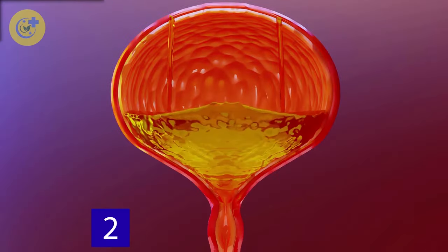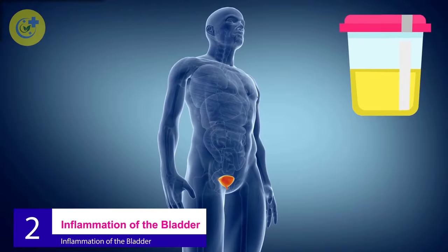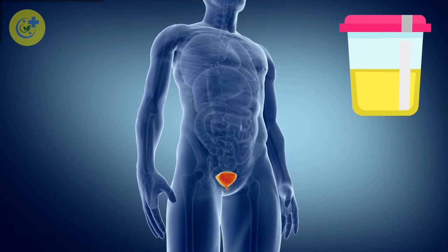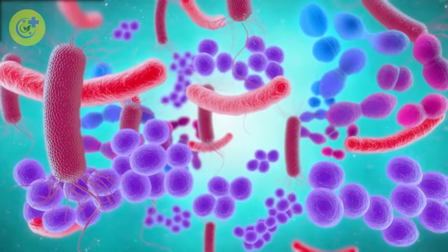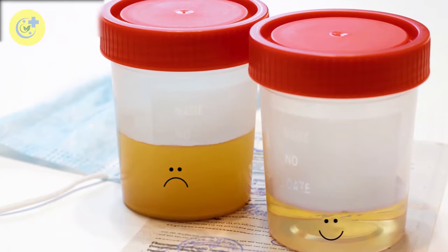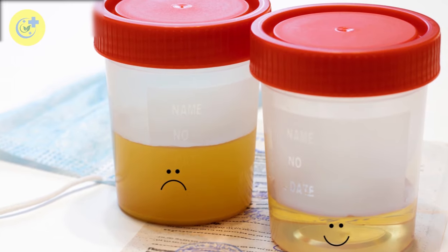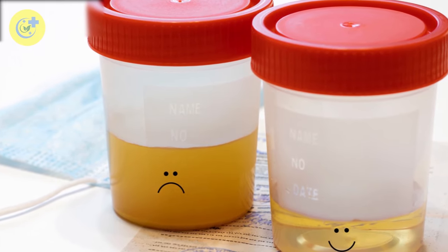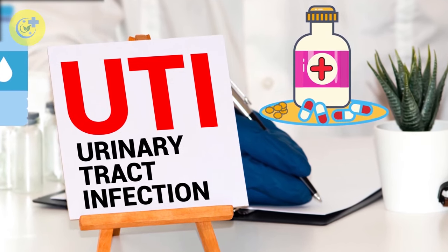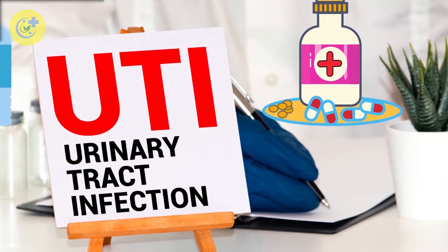Number 2: Inflammation of the bladder. A bladder infection can cause pus cells to appear in your urine. Bacteria or fungi that infect your urinary tract may be carried out by urination, and you may notice a cloudy or bloody discoloration of your urine after going to pee. Urinary tract infections usually clear up on their own with rest, some water, and over-the-counter medications. But if cystitis keeps coming back, you should see a doctor for an antibiotic prescription.